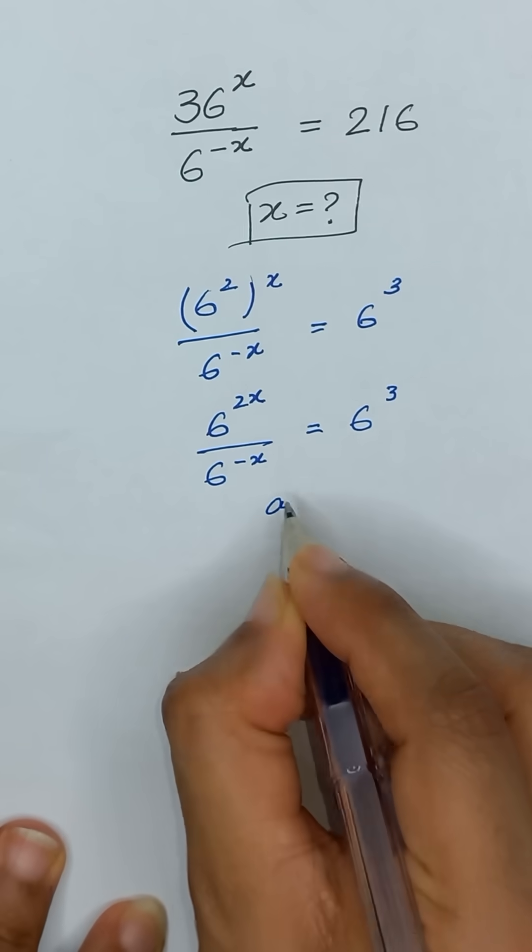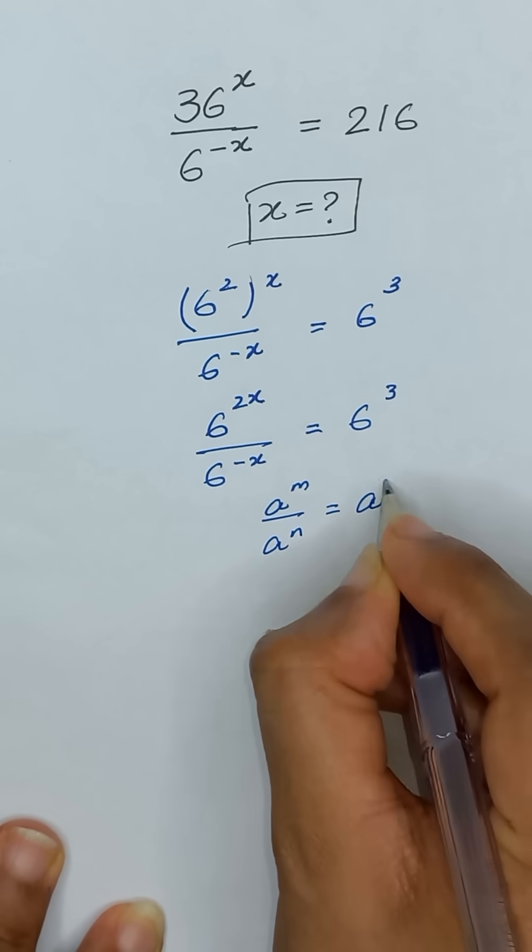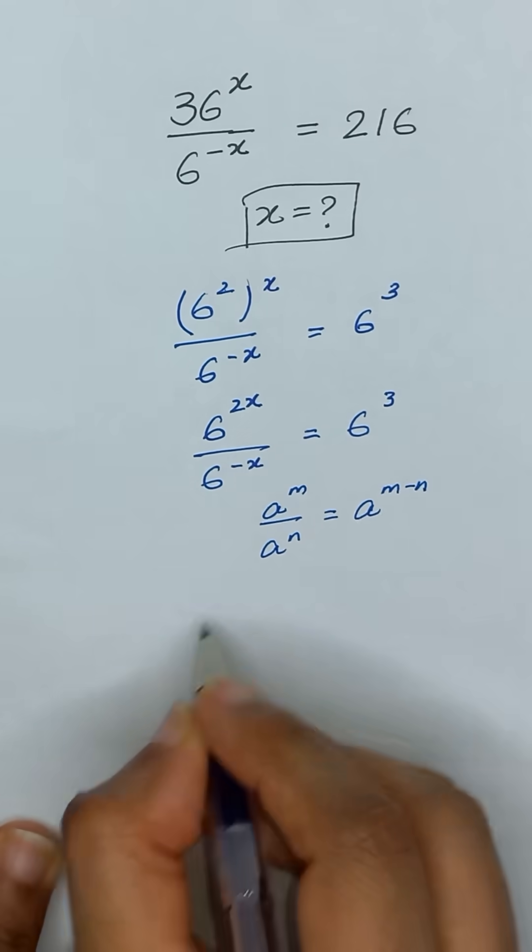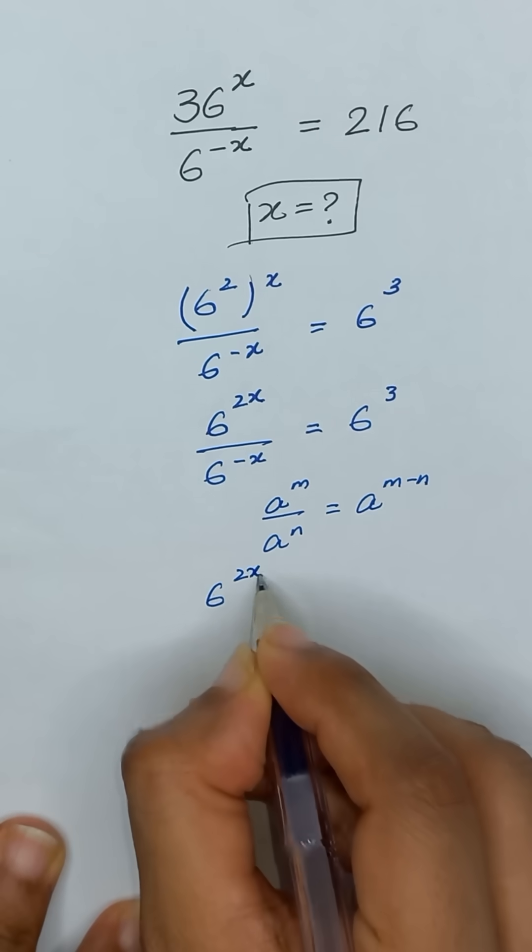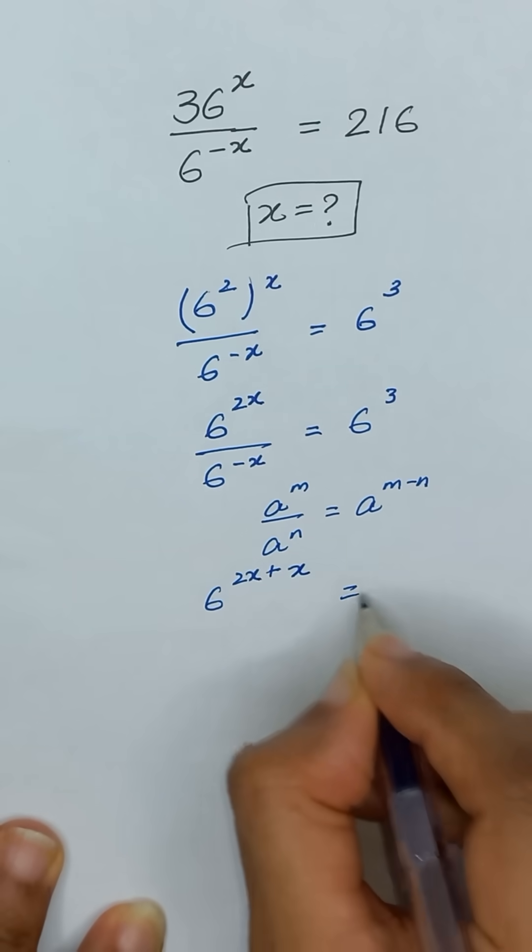Now we know that this exponential rule which is a to the power m divided by a to the power n is equal to a to the power m minus n. So it will become 6 to the power 2x minus times minus will become plus x is equal to 6 cube.